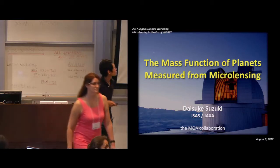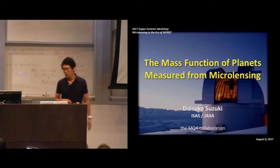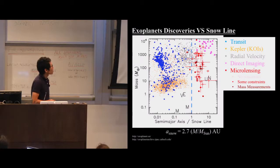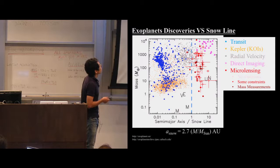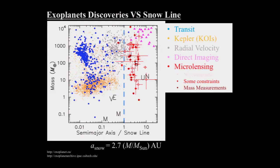I'm Daisuke Suzuki from ISAS/JAXA. I'll talk about the mass function of planets measured from microlensing. This plot shows discovered exoplanets, where the x-axis is the semi-major axis divided by the snow line — similar to what Yoshi showed before — and the y-axis is Earth mass.